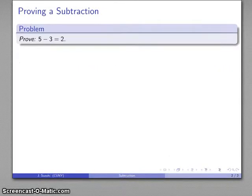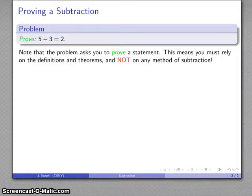For example, let's try and prove that 5 minus 3 is equal to 2. And again this is a prove statement, and in general what we do when we have a prove statement, we want to rely on our definitions and theorems, and not on any actual method of performing the subtraction.